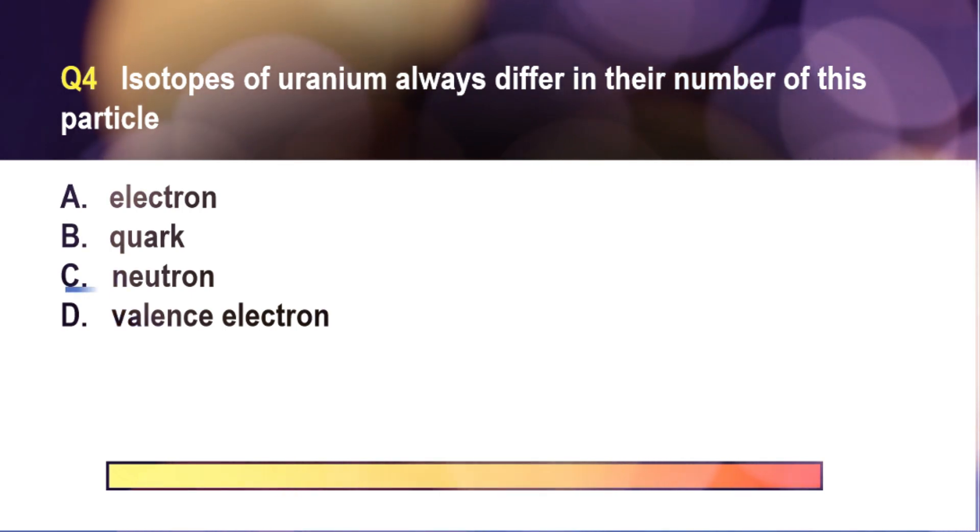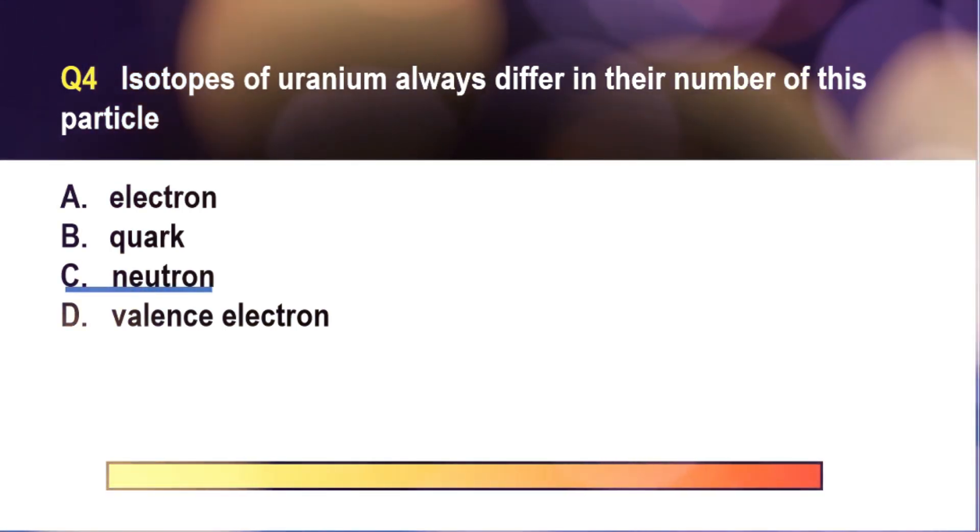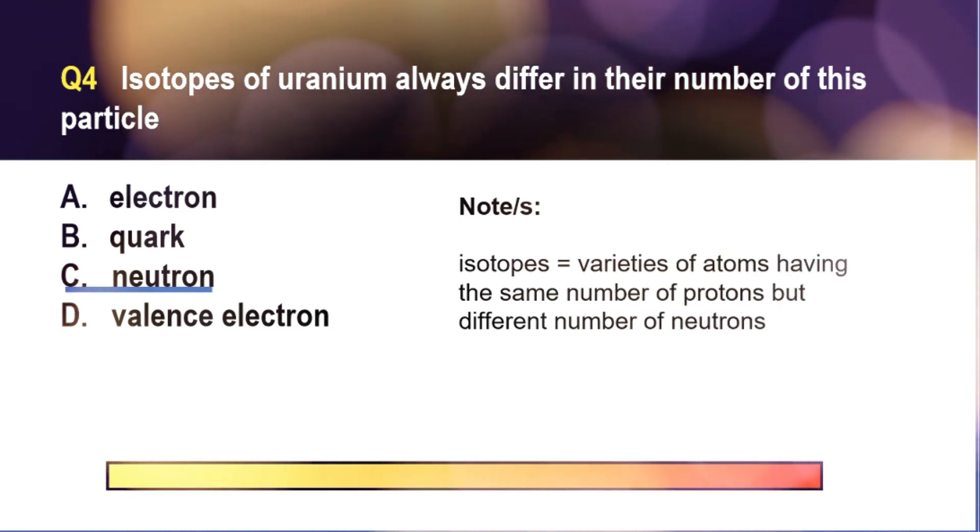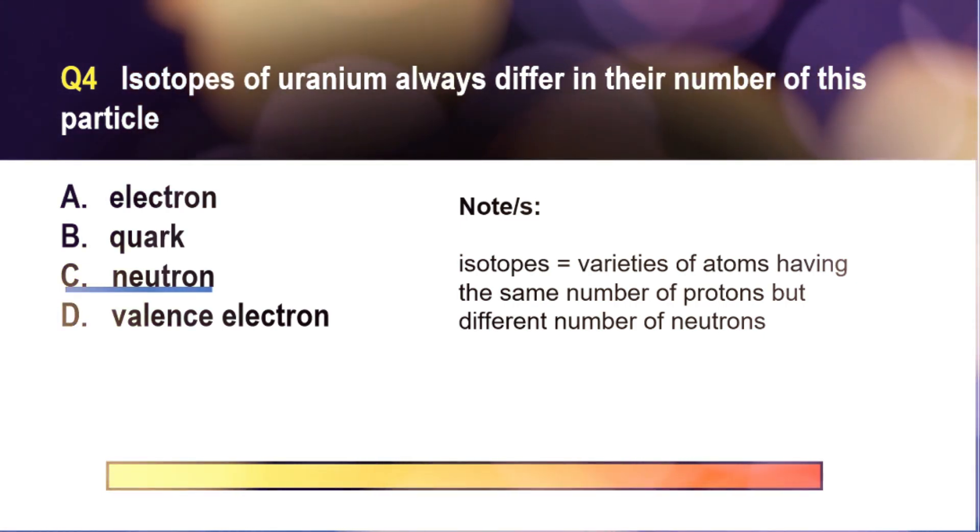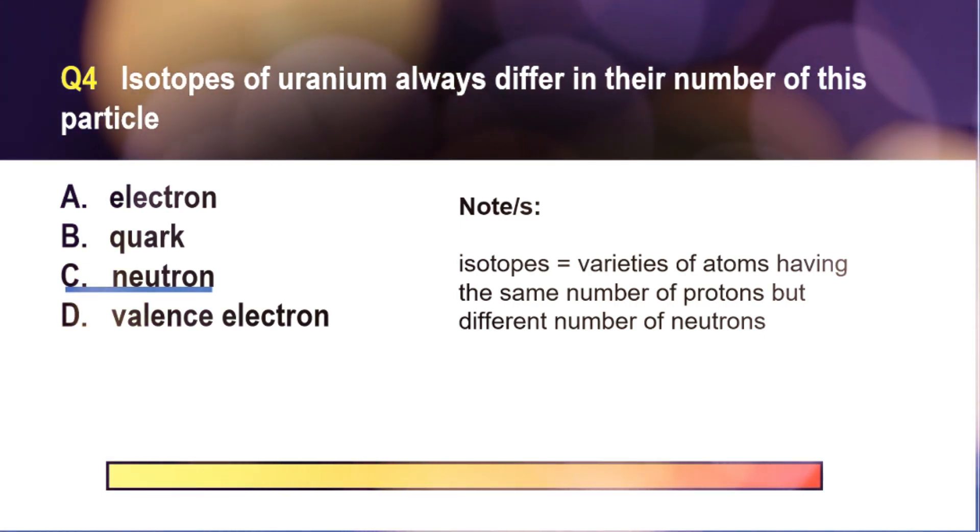The correct answer is letter C. When we say isotopes, these are just varieties of atoms having the same number of protons, but different number of neutrons.